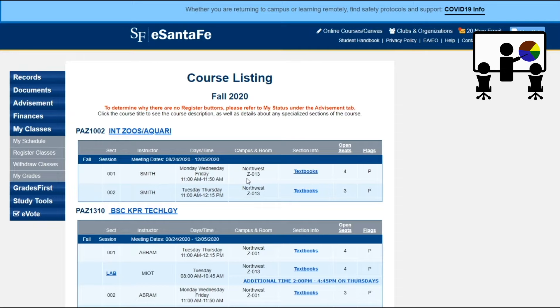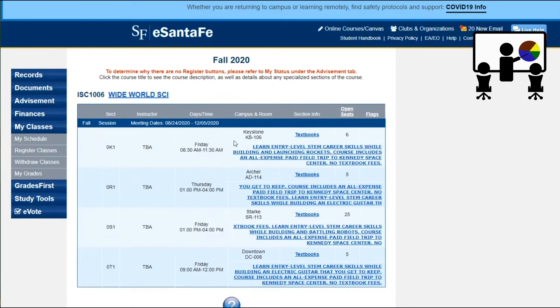When you register for a traditional in-person class, there will be a physical location listed. Look for either the Northwest campus or one of our six educational centers, followed by a building letter and a room number.